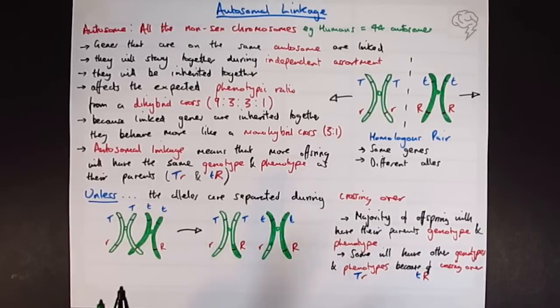So the possible genotypes that can result from here, we could have, obviously, big T, little r. We could have, also, we could have, after crossing over, this shows us here, we could have big T, big R. We could have little t, little r. And on the outside, little t, big r.